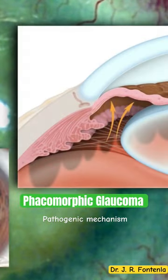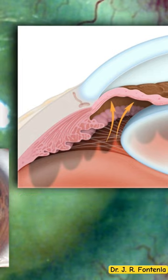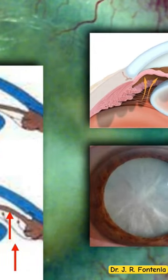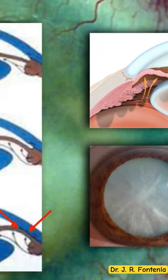As a pathogenetic mechanism, senile or traumatic cataract increases the thickness of the lens and may cause pupillary block and angle closure. This iridolenticular opposition disrupts the flow of aqueous humor from the posterior chamber to the anterior chamber, resulting in accumulation of aqueous humor in the posterior chamber, pushing the iris root forward, which may ultimately contact the trabecular meshwork and lead to angle closure.